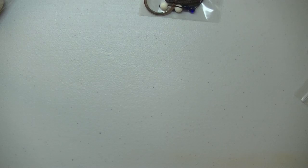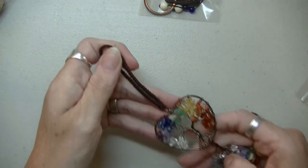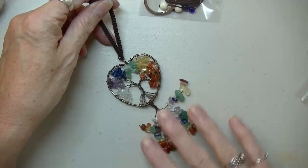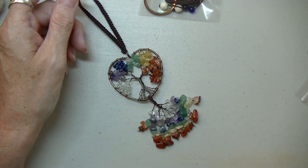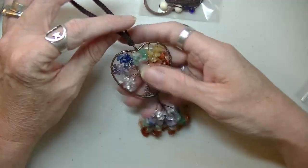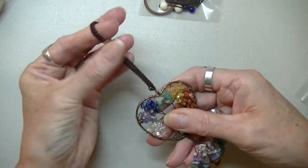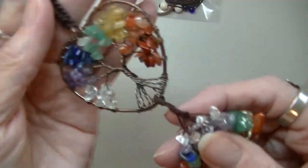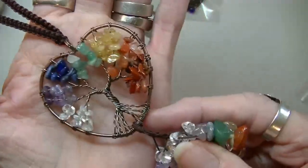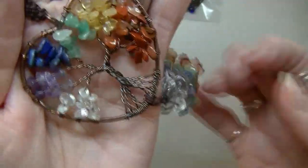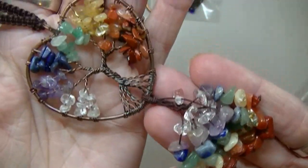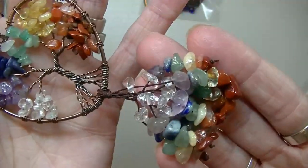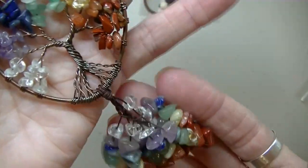The next one I want to show you can be used as a keychain or you can hang it on your wall or you can hang it in your car if you got a hook. It's the tree of life heart and it's got the gemstone chips. It's all different gemstones. I only have one of these.